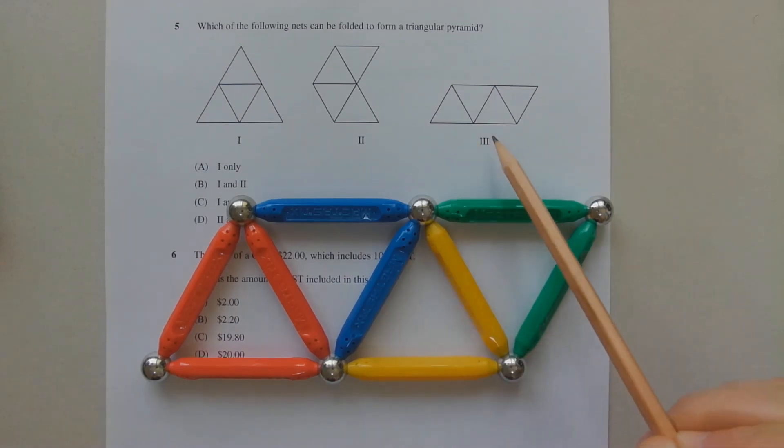Let's consider the third net. So the red triangle here represents the leftmost triangle here, and the green triangle represents the rightmost triangle here. And the blue triangle is this triangle there, and the yellow triangle is this triangle here.